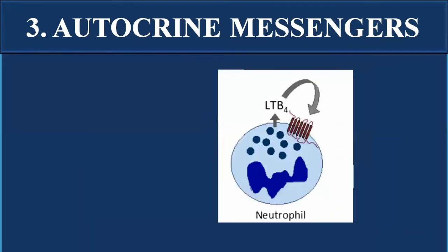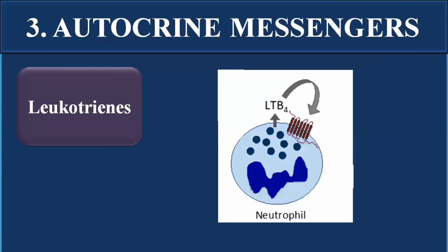An example of autocrine messengers is leukotrienes. Leukotrienes are released from different white blood cells, such as neutrophils, and act on the same cell. They are involved in the production and proliferation of white blood cells and play a role in immune and defense reactions in the human body.